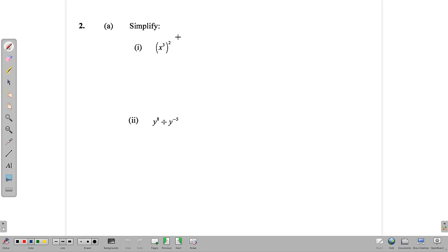Question 2, which is our algebra question. We are asked to do some indices work. Here we have x to the third squared, which simply means x to the third times x to the third. And using our addition rule, when you multiply similar bases, you add the powers. 3 plus 3 is 6.